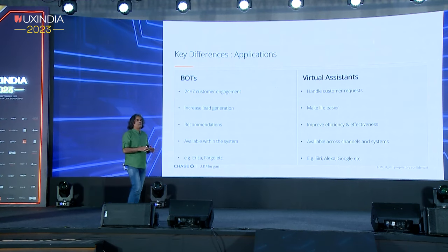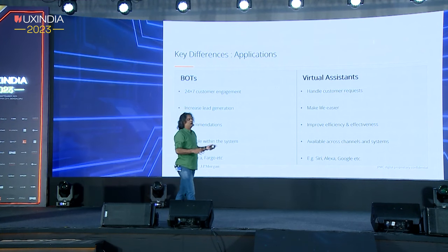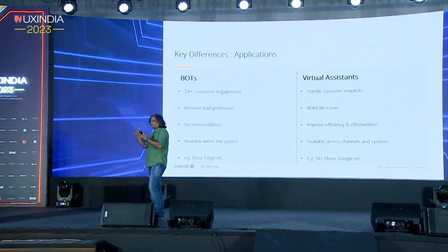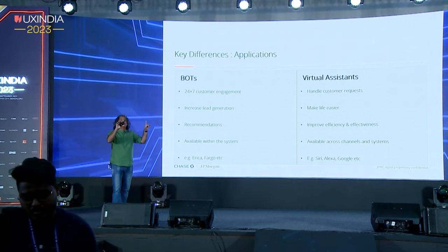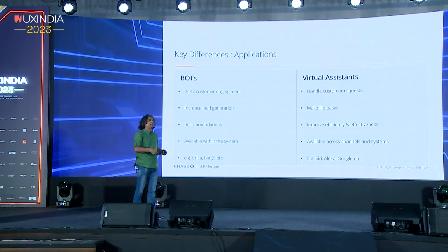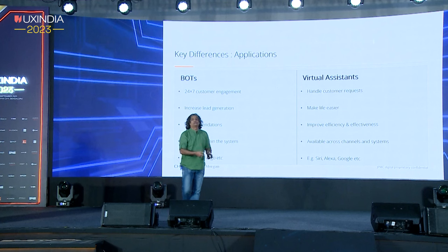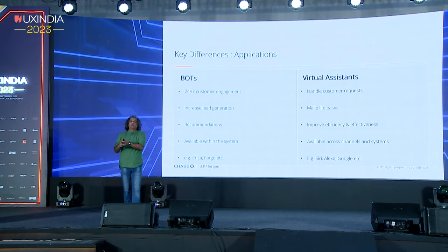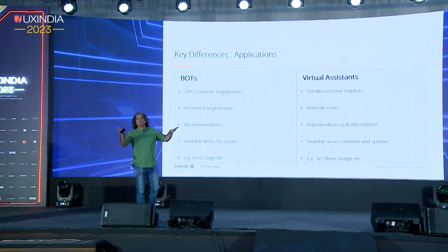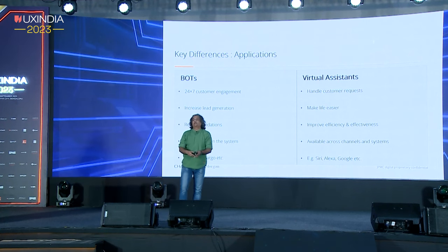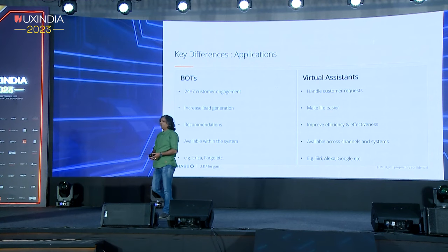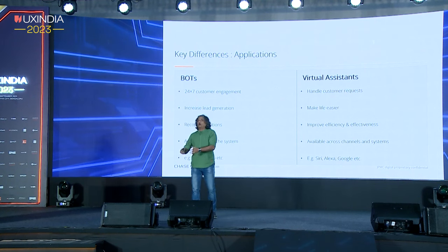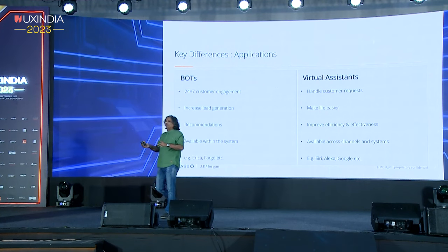Bots are usually used for 24/7 assistance, consumer engagement, and lead generation. They provide recommendations and are available within a system — part of your websites or mobile apps. When you open a website, a bot jumps in from the bottom. They are restricted to a system. Virtual assistants, however, can be omnipresent — in your car, smart home devices — and handle multiple things together, working with third-party apps to book an Uber or order food from Swiggy. Bots don't do that; they are far more restrictive.